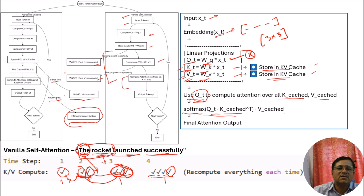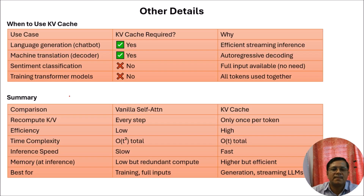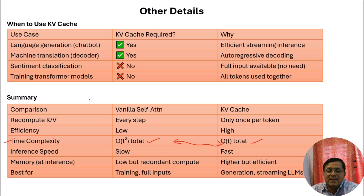Only when a new token appears do we do all the calculations — computing the query, key, and value linear projection matrices. It is important to note again that we are not storing the query-related linear projection values. The time complexity of vanilla self-attention is O(T²), but with KV Cache it is just O(T). However, these computations come with some limitations also.